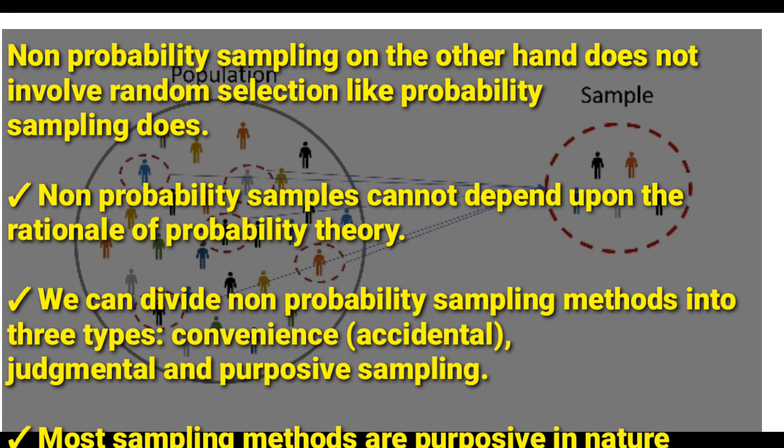Non-probability sampling on the other hand does not involve random selection, because probability sampling involves random selection. But non-probability doesn't involve random selection. Non-probability samples cannot depend upon the rationale of probability theory.